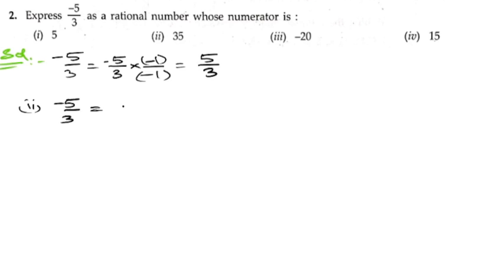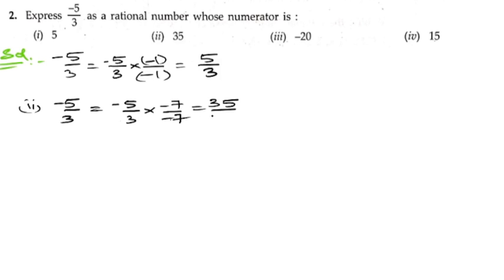The second part: minus five by three. To make the numerator positive thirty-five, we need to multiply it with minus seven by minus seven, because minus into minus is plus. Five sevens are thirty-five; for the denominator, three sevens are twenty-one, giving thirty-five by minus twenty-one.